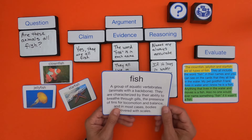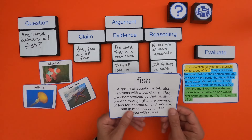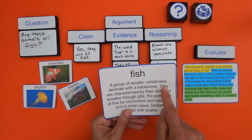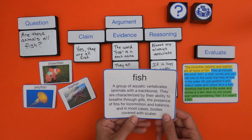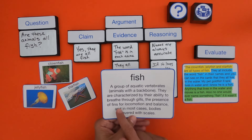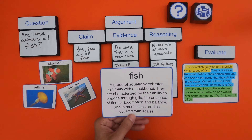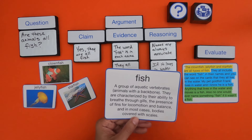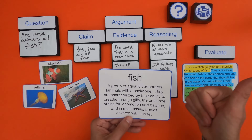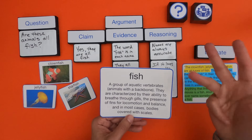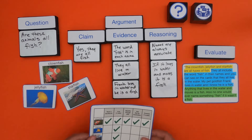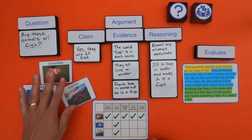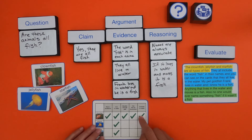If I read the definition of a fish, that might help figure out which of these are fish. A fish is a group of aquatic vertebrates — they live in water and have a backbone. They're characterized by their ability to breathe through gills, the presence of fins for locomotion and balance, and in most cases their bodies are covered with scales. So a fish must live in water, have a backbone, have gills, have fins, and have scales. If we do a little research, the clownfish has all five of those, while the jellyfish and the starfish only live in water.